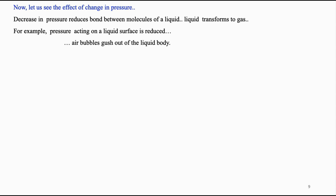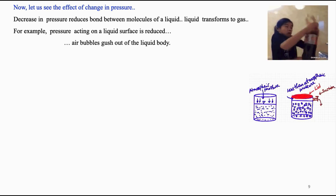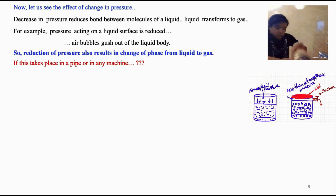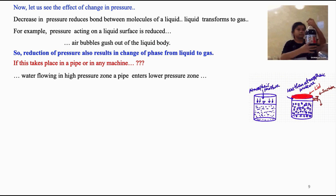Change of state can also be caused by change in pressure. Decrease in pressure reduces the bond between molecules of a liquid. The molecules attain new freedom and escape from liquid state to gaseous state. For example, when pressure acting on the surface is reduced, air bubbles gush out of the liquid body — once pressure is reduced, hidden bubbles can be seen gushing out of the liquid. The practical concern is: what happens if this vaporization takes place in a pipe or a machine?